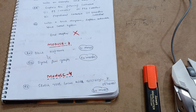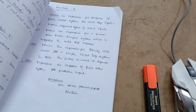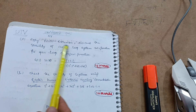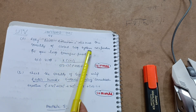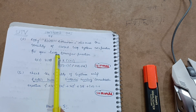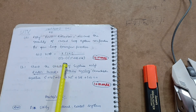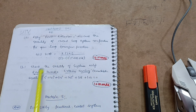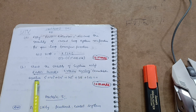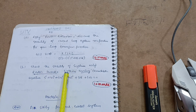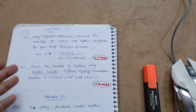Apart from Root Locus, in Module 4 there are also Routh's Criteria problems, which are very easy ones carrying 10 marks each. For example: apply Routh's criteria and discuss the stability of a closed loop system given an open loop transfer function. I have uploaded a video for it. There is also: check the stability of a system using Routh's criterion having a given characteristic equation — you apply Routh's criteria and determine whether the system is stable or not. This also carries 10 marks.